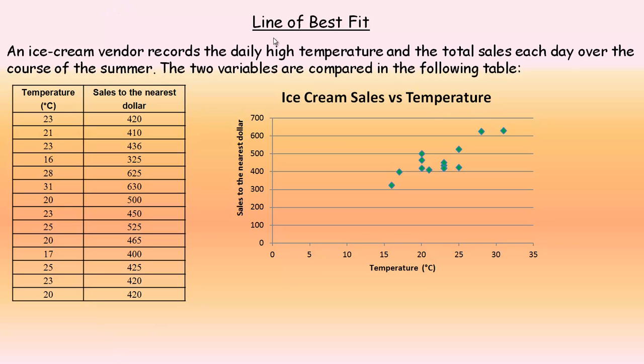In this tutorial we're going to take a look at line of best fit. The example on this page shows an ice cream vendor that records the daily high temperature and the amount of ice cream they sell to the nearest dollar.